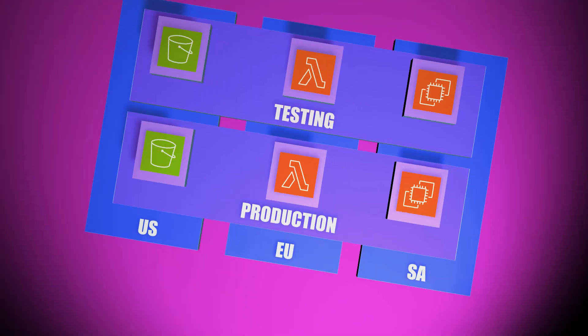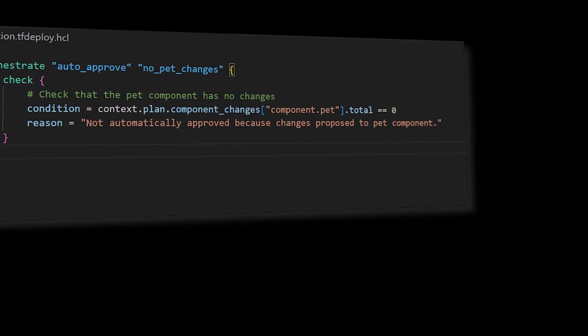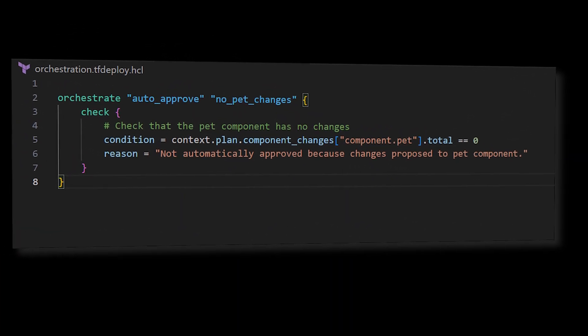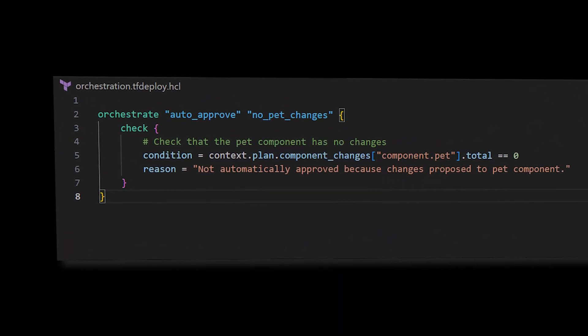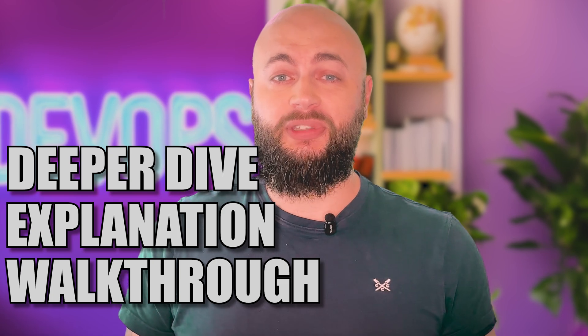Terraform stacks are an incredible way to help Terraform scale with minimal complexity. A stack is a configuration layer composed of components and deployments. Deployments deploy multiple components to a given environment. Along with stacks comes orchestration rules, which allow for auto-approval of plans when certain conditions are met — for example, if the plan has no resource removals.